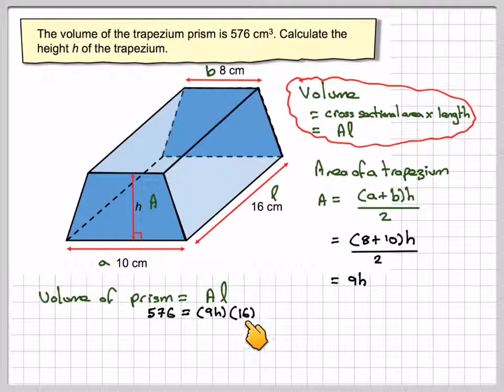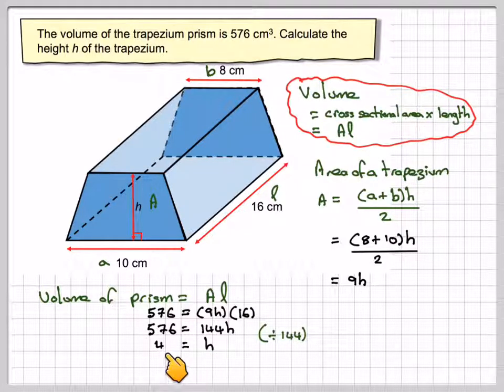9 times 16 is 144, so we get 576 is equal to 144H. This is a simple equation. To solve it, we need to divide by 144 on both sides. So we get H is equal to 4.